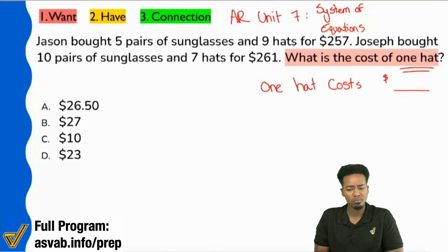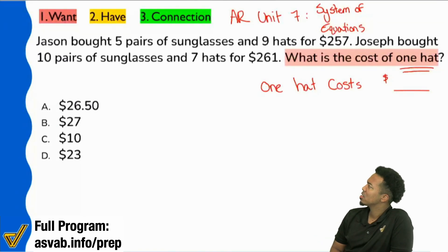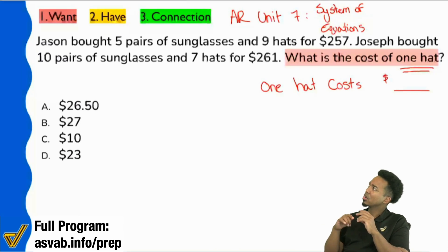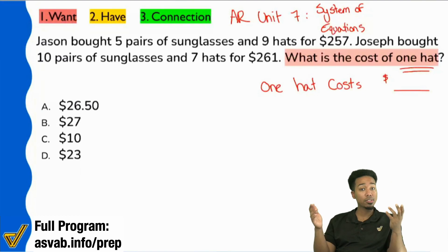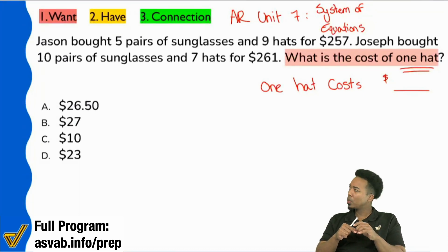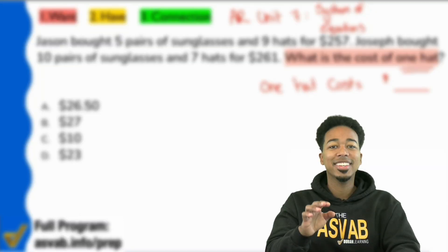Does anybody here notice anything in common that this problem has with the other questions? Because in the other questions we saw a bigger number and a smaller number, smaller number and a bigger number. So two numbers, right? Here, we're looking for the cost of one hat. Is there a cost of something else that we don't know? Right, sunglasses. Notice we're looking for the cost of a hat, and in the question itself and the problem, we're talking about the cost of a pair of sunglasses as well.